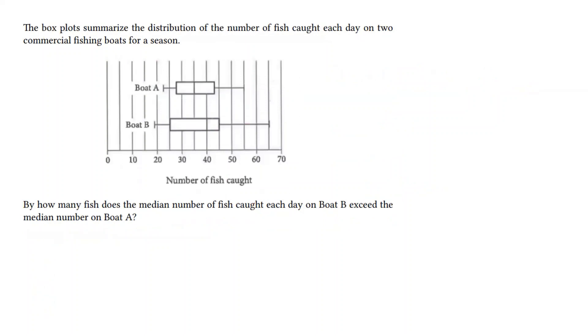With a box plot, note the anatomy of a box plot. The line that crosses through the box is denoting the median. So those two lines are the median, and we simply need to read the scale of the horizontal axis.